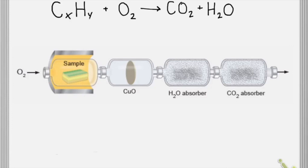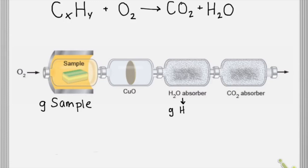To perform a combustion analysis, we perform the reaction in this first chamber, where we put in some mass of sample and react it with excess oxygen. Then we pass the gases through a filter and into this water absorber, so we pull all of the water out of our mixture, and we're able to figure out how many grams of water are present in the products, which can tell us how many grams of hydrogen total there is in a sample.